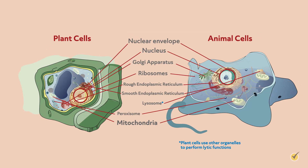We've made it to the outskirts of the cell. Although the cell membrane isn't really an organelle, it is the last similar physical feature of plant and animal cells. Just like the nucleus, both cell types are surrounded by a membrane known as a phospholipid bilayer.